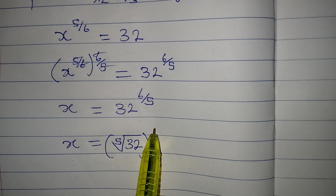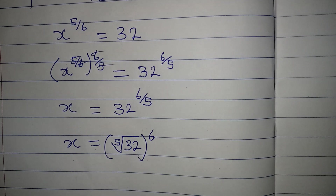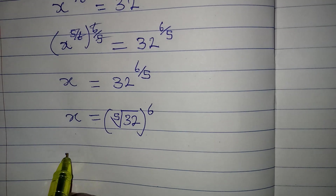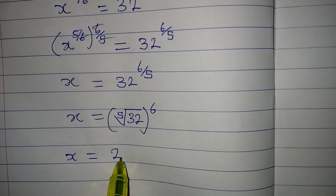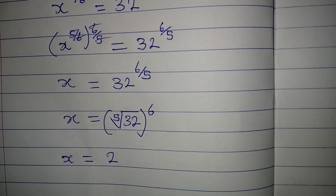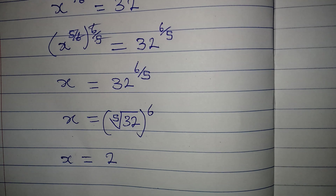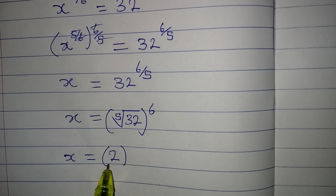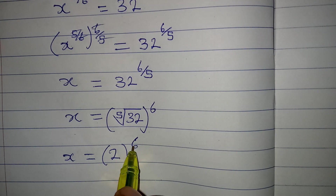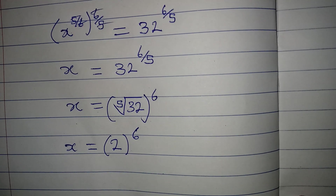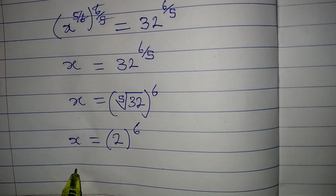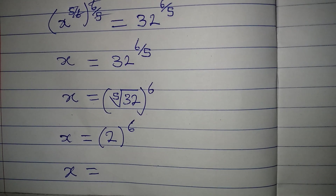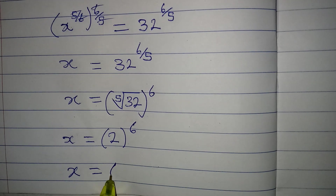The question is: what is the fifth root of 32? The fifth root of 32 gives us 2, because 2 times 2 times 2 times 2 times 2 equals 32. We then raise this to the power of 6. Now 2 to the power of 6 is 2 times 2 in 6 places, and that gives us 64.